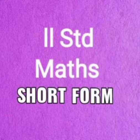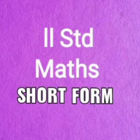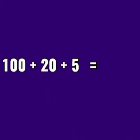When we add the numbers in expanded form, we get the short form. For example, 100 plus 20 plus 5. When we add these numbers, we get the answer 125.